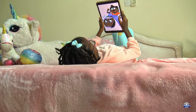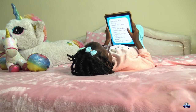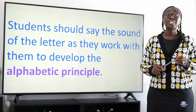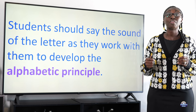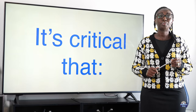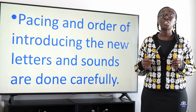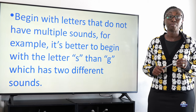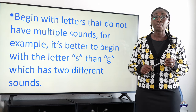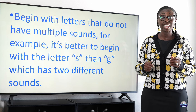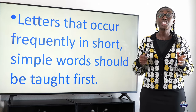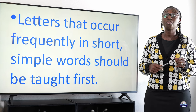Students should have exposure to books and decodable texts related to the letters and sounds they are learning. It is critical that students say the sound of the letter as they work with it. Pacing and the order of introducing new letters and sounds must be done carefully — begin with letters that do not have multiple sounds. For example, it is better to begin with the letter 's' than 'g', which has two different sounds. Letters that occur frequently in short, simple words should be taught first.